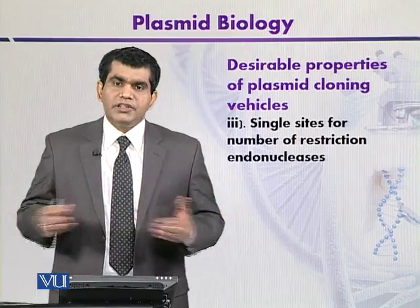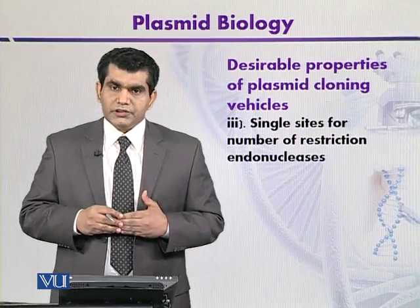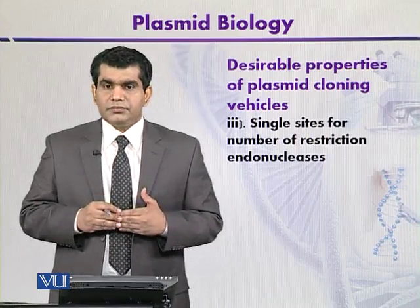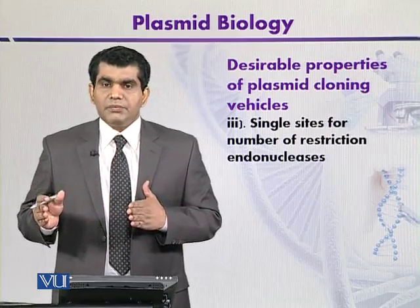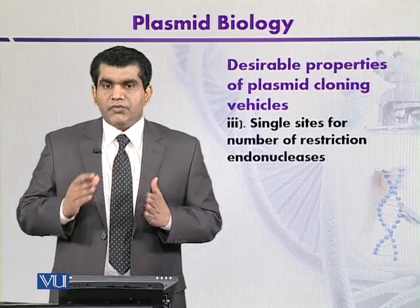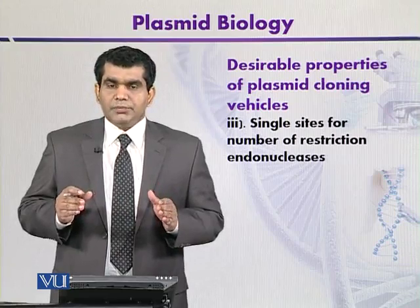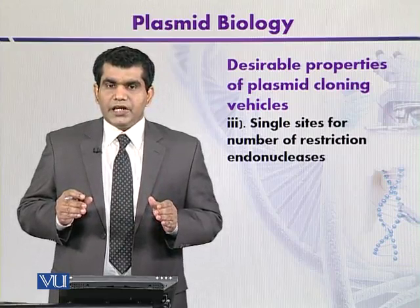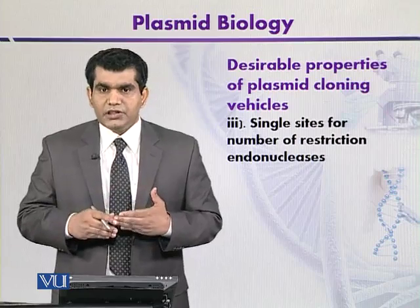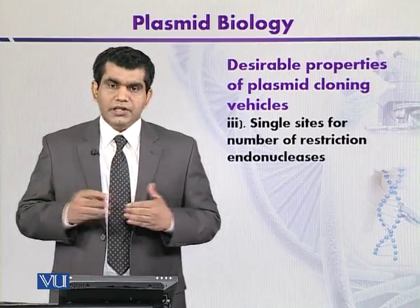The third trait is mainly related to the presence of single restriction sites for different types of restriction endonucleases. For different types of restriction enzymes, there must be only one restriction site, so that the plasmid can be converted into a linear molecule that can subsequently be ligated with the target DNA.